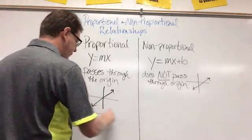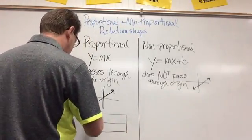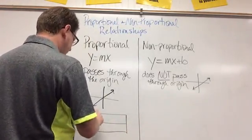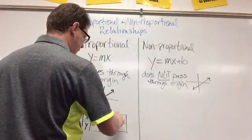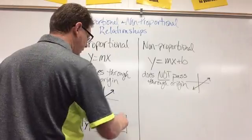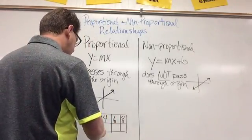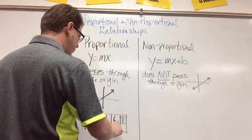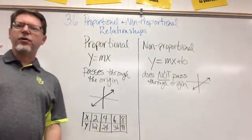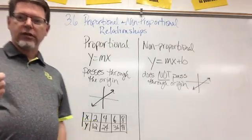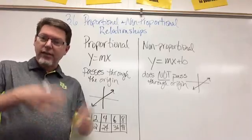I'm going to draw a quick table with a couple of points on here. I'll do my x and my y, and I'm going to do 2, 4, 6, 8, and I'm going to do 12, 24, 36, and 48. There are a couple of ways to see if this is proportional. First of all, pick any two points and see if they're proportional.